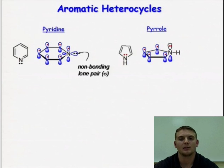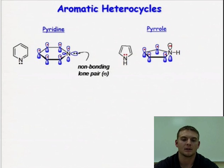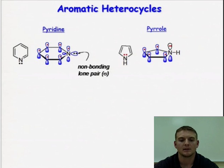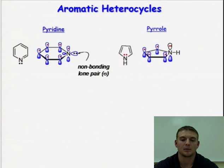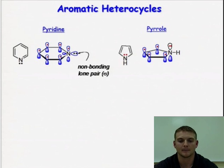Nevertheless, if we still make a count of all pi electrons in the pyridine system, we can count up 6 pi electrons. This is in accord with the 4n+2 rule that predicts 6 pi electrons for a 6 pi electron system to be aromatic, and indeed, pyridine is aromatic.